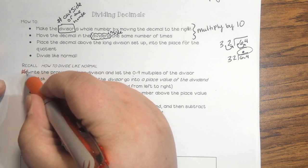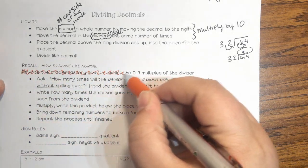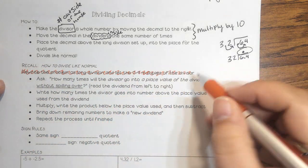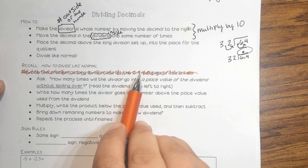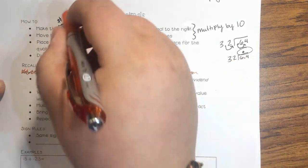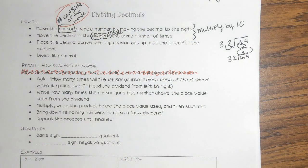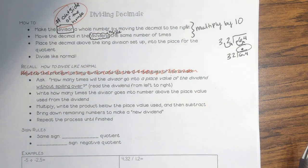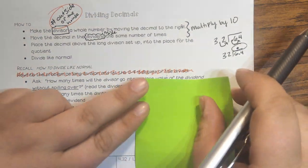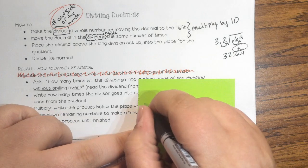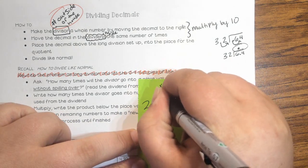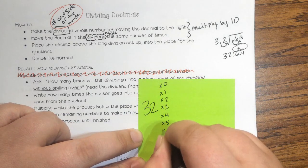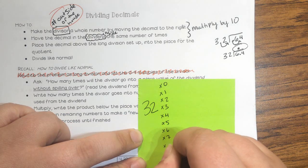My biggest hint for people to divide like normal — and this helps you guys learn your multiplication facts too — rewrite the problem as long division. And then, this is the big part: list the multiples of 0 through 9 of the divisor, the number on the outside of the house. So in the problem that I wrote, I'd list the numbers for 32. I would say 32 times 0, times 1, times 2, times 3, times 4, times 5, times 6, times 7, times 8, times 9.